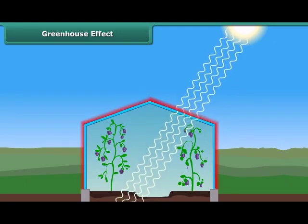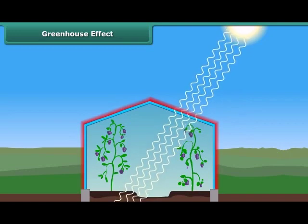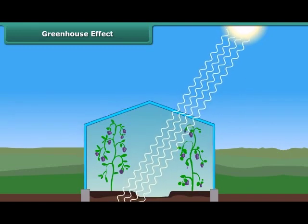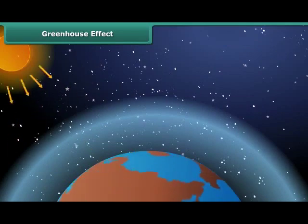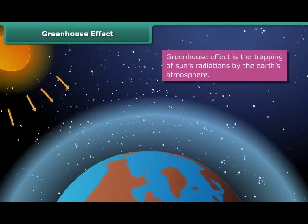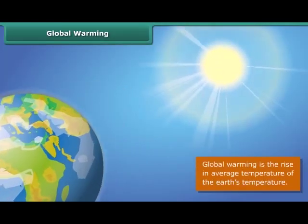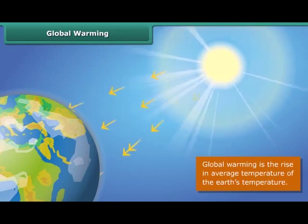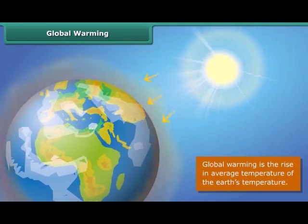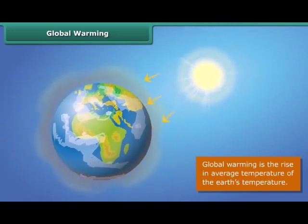Similarly, greenhouse gases like carbon dioxide, methane, and nitrous oxide in the atmosphere act like glass panes. When the sun's radiation reaches our atmosphere, some rays are reflected back into space, and some are trapped by greenhouse gases, causing the atmosphere of the Earth to warm up. Scientists say that greenhouse gases like CO2 trap heat from the sun and increase the temperature of Earth's atmosphere, leading to global warming.